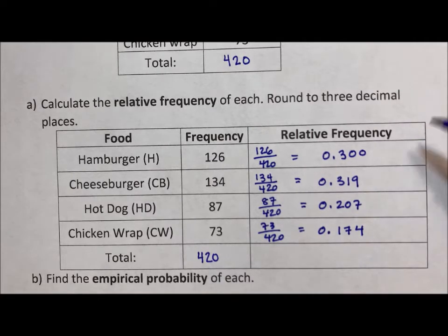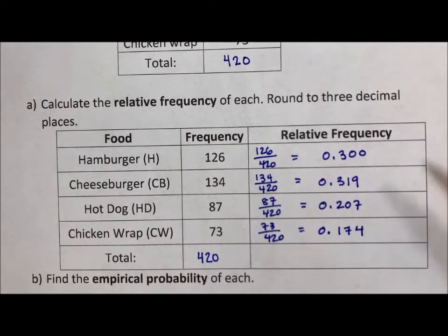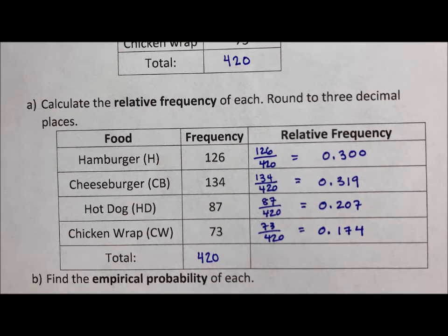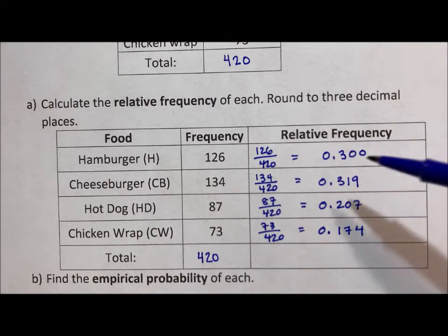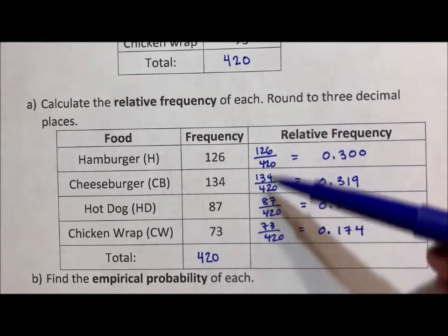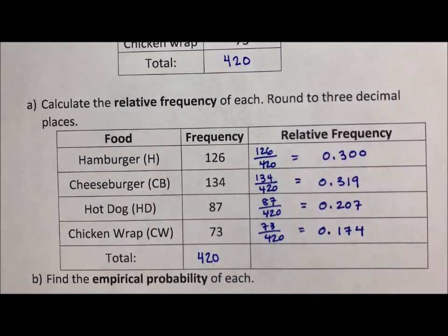Now if you were asked to find the percent and it becomes 20.7%, that is a percent and a percent is allowed to be greater than 1. But the probability, if you are looking for probability or relative frequency, you better have a 0 first or a fraction where the numerator is smaller than the denominator.